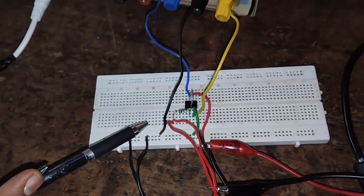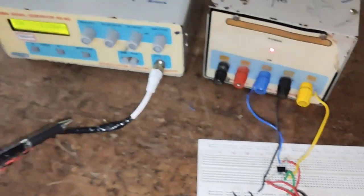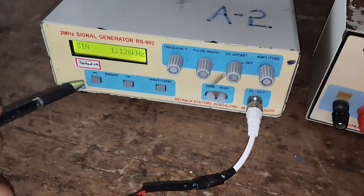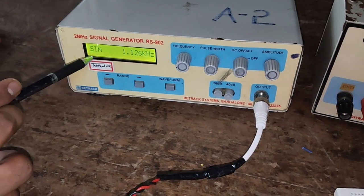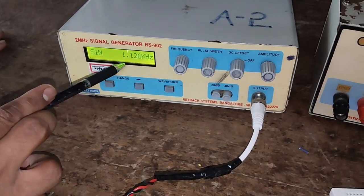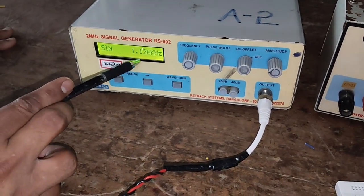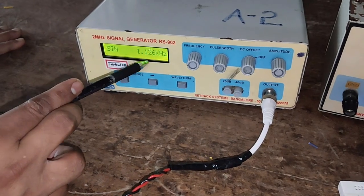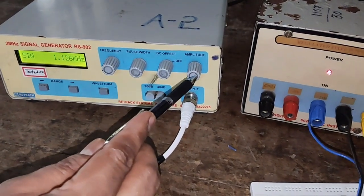Now we will apply the input frequency and voltage with the help of the function generator. Set the waveform as sine wave and set frequency as 1 kilohertz. Here it is 1.1 kilohertz. And set the input voltage as 1 volt.